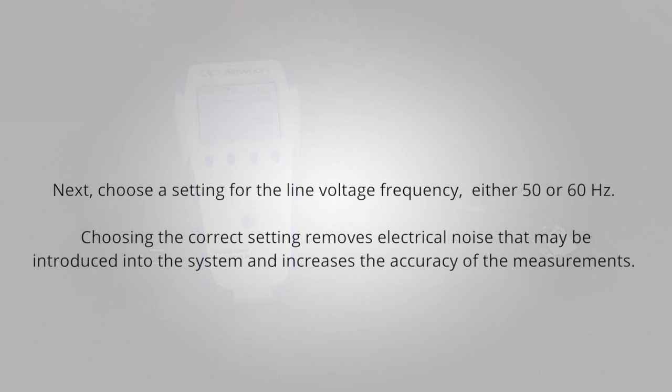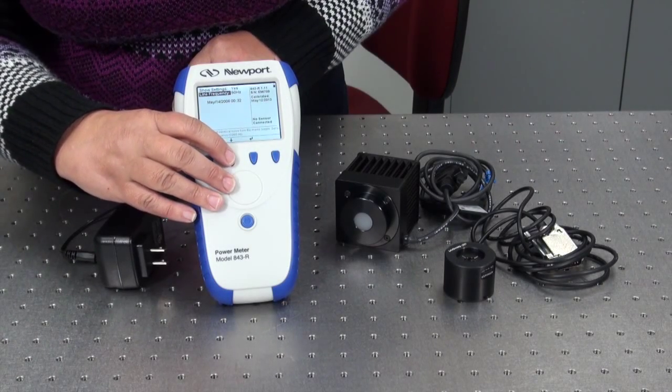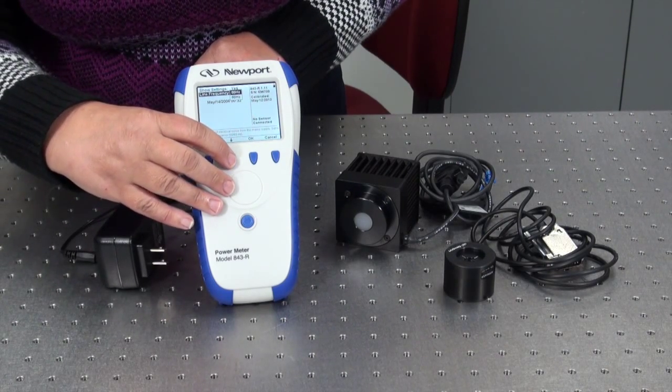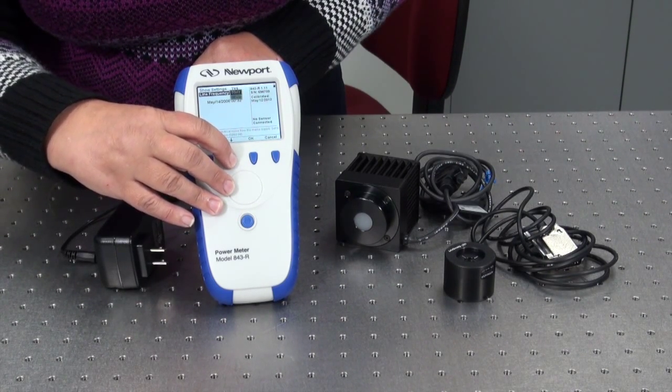Next, choose a setting for the line voltage frequency, either 50 or 60 hertz. Choosing the correct setting removes electrical noise that may be introduced into the system, thereby increasing the accuracy of the measurements. Press the down arrow until the line frequency is highlighted. Press the enter arrow. Select the correct line voltage for your power grid.